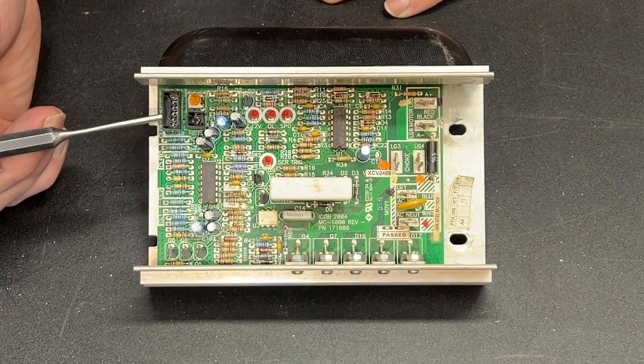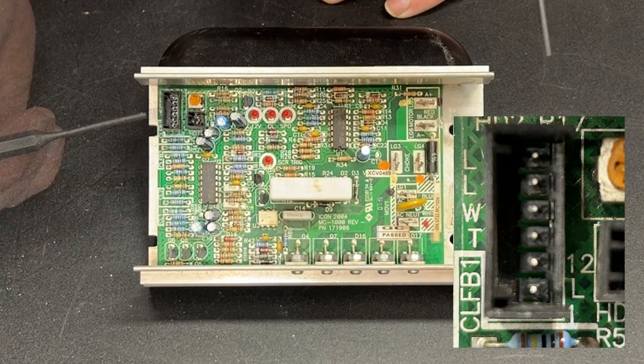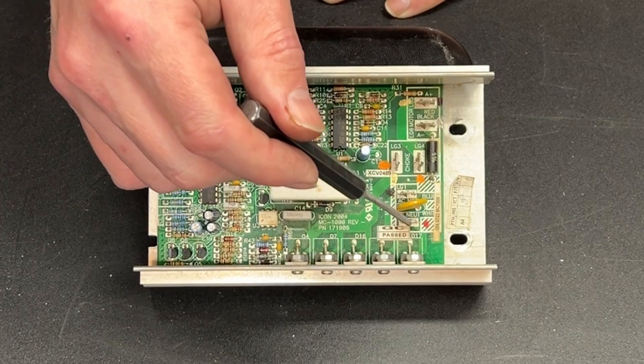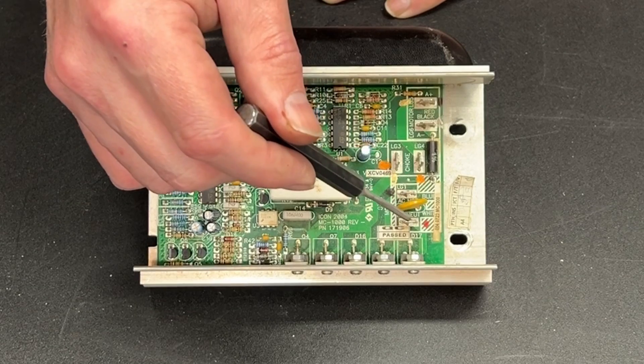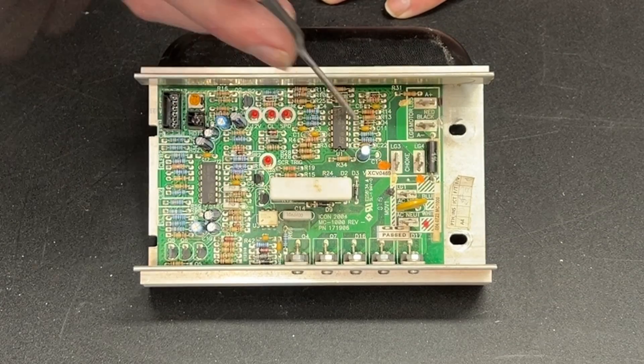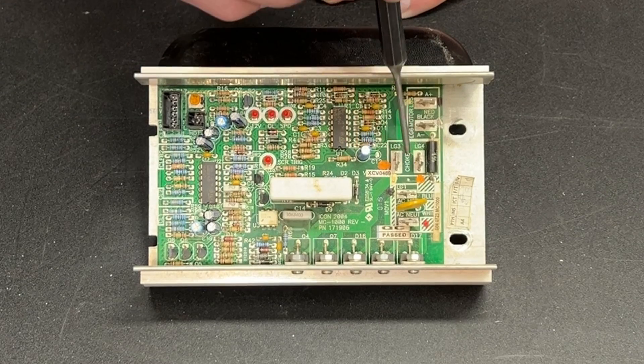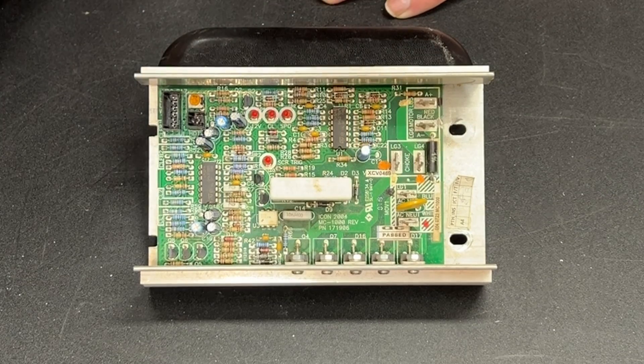Got a whole series of connectors that connect to the treadmill control board. You've got your power coming in from the AC side, you've got your power going out to the motor, and then you've got two very important terminals right there with the word choke written between them.